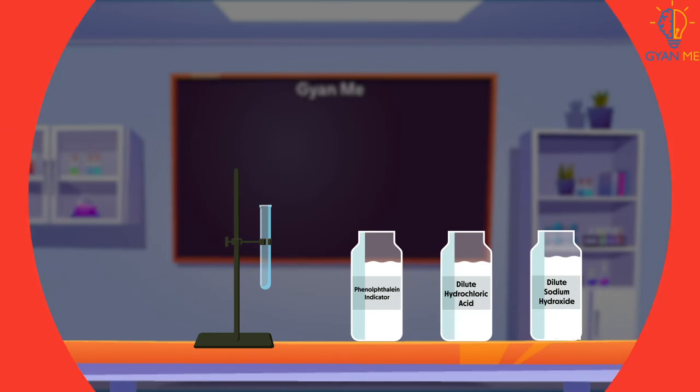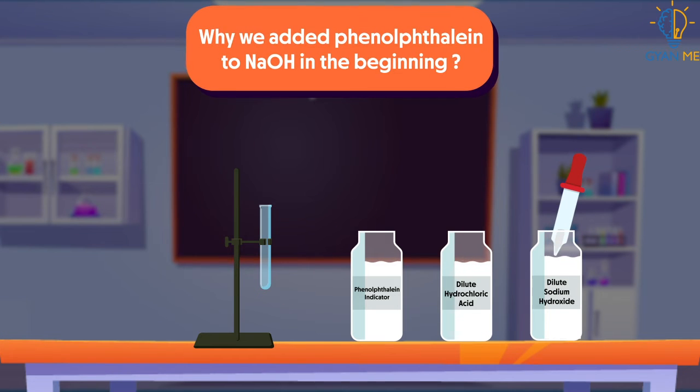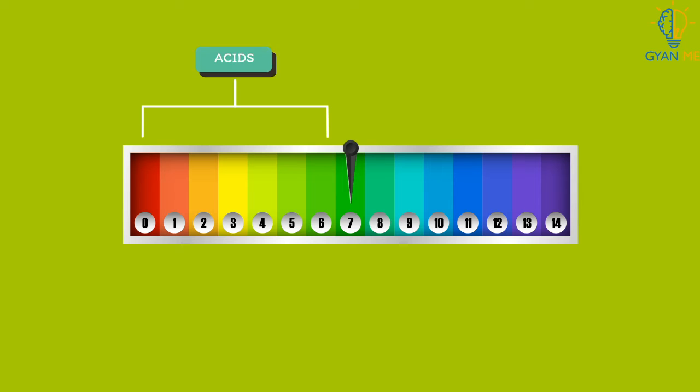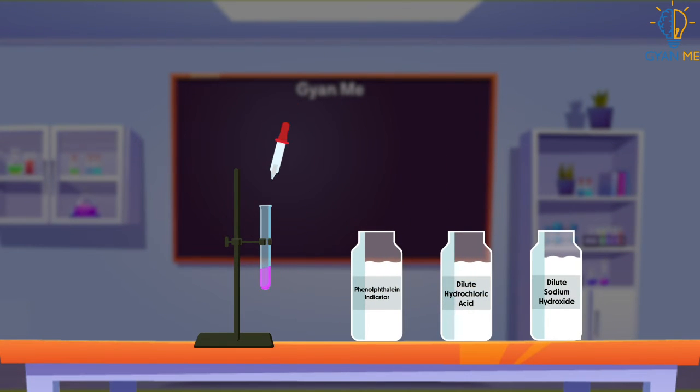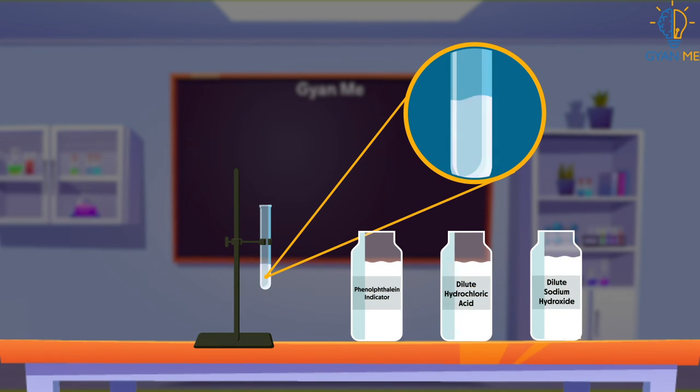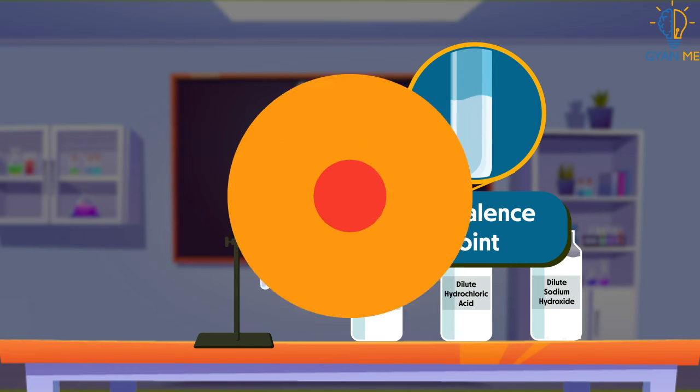Students, you may still be wondering why we added phenophthalein to sodium hydroxide in the beginning. Students, now you know that equivalence point tells us that acid and base have neutralized each other after their reaction. We added phenophthalein to know that reaction has reached equivalence point.